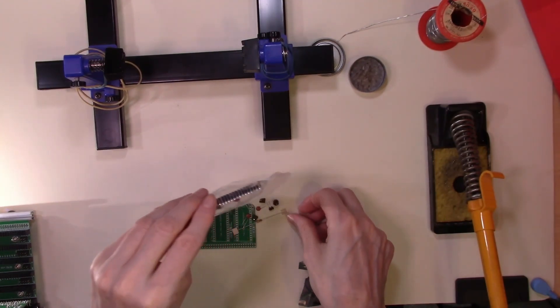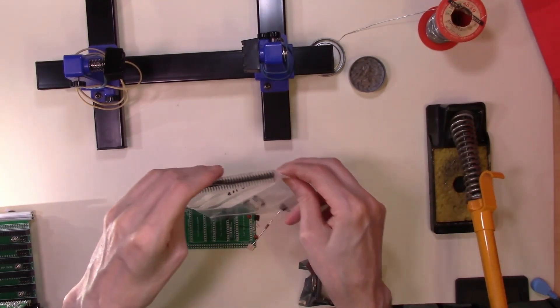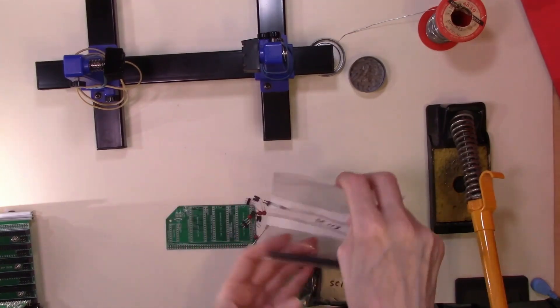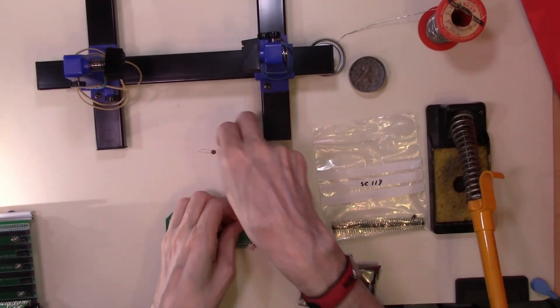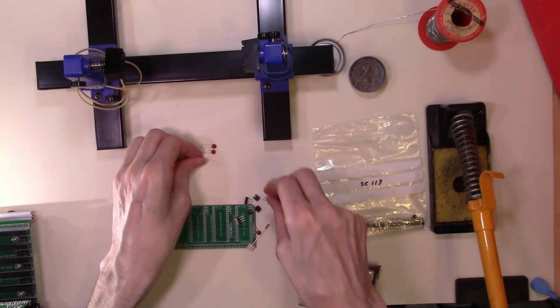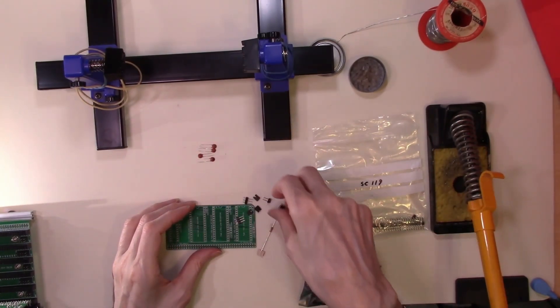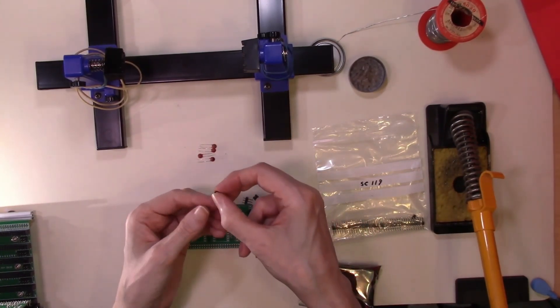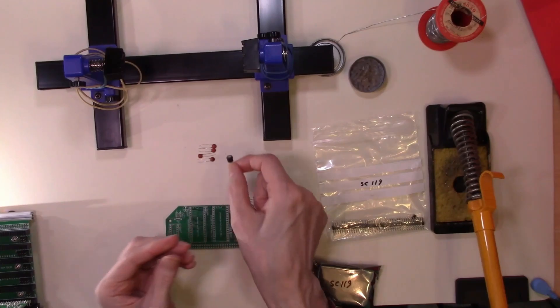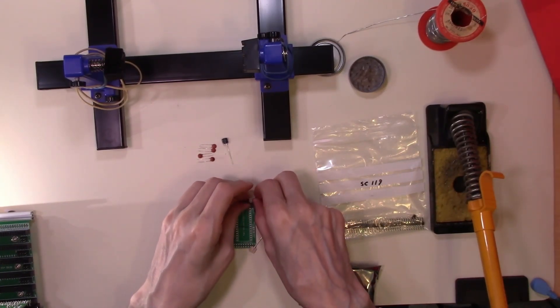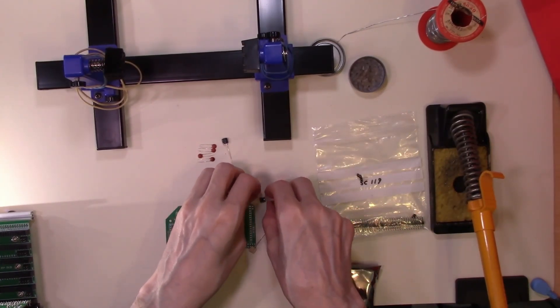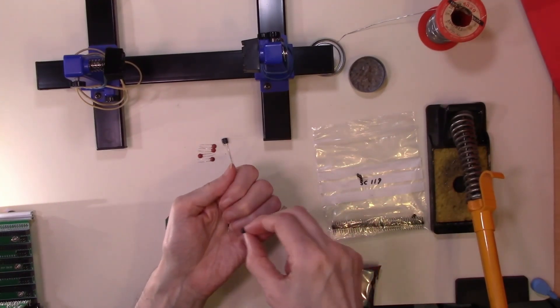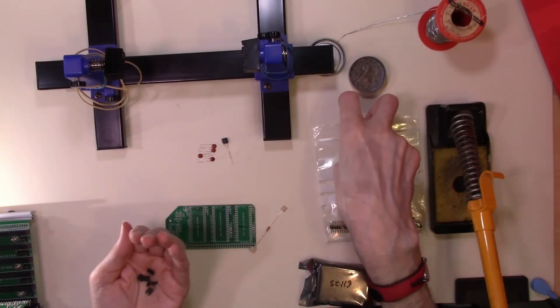Now let's identify all the components first that we're going to have to put in. So here we have our four capacitors. And the other single capacitor. So they're fairly easy to tell apart. We should have no problems putting these together.